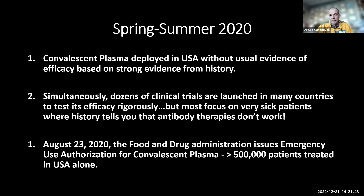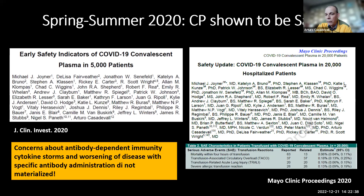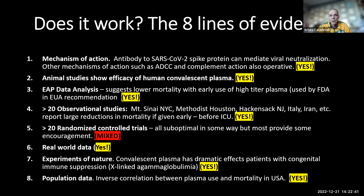People were worried about things like antibody-dependent enhancement and antibody triggering a cytokine storm by cross-linking FC receptors. I knew history and thought all those concerns were really remote, but you couldn't dismiss them. By May, there was clearly evidence that you could infuse antibody to people infected with COVID safely — giving a unit of plasma was associated with very few side effects. The first paper was published in JCI, and a second paper came about three months later on the first 20,000 patients.